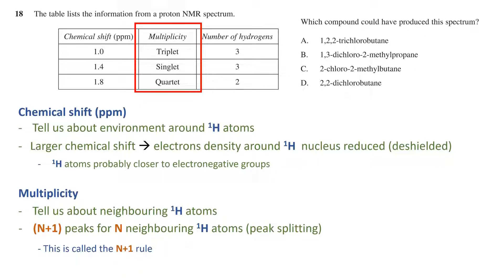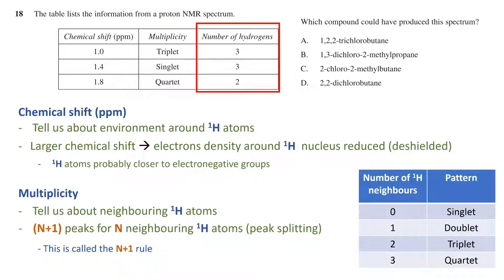This is called the N plus 1 rule and is summarized in this table. Finally, the last column tells us how many hydrogens are associated with the given signal.